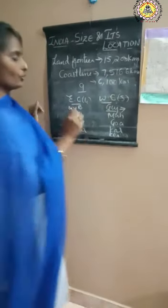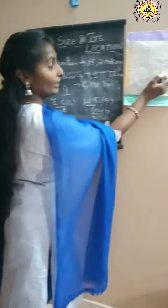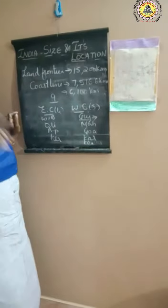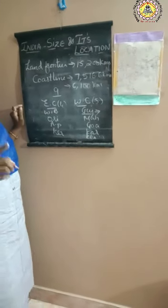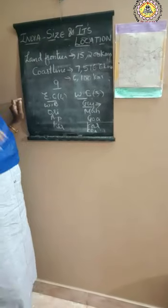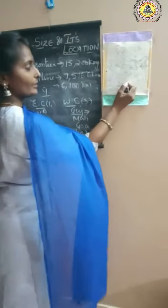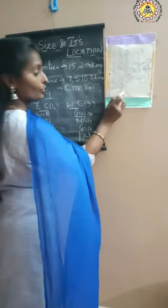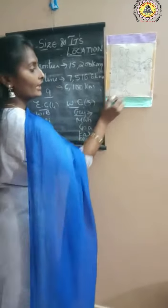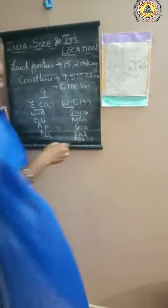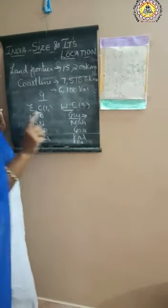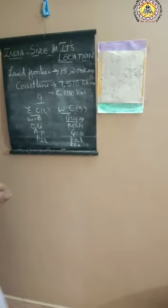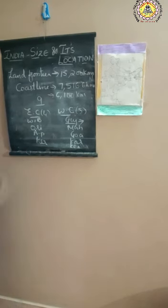Each coast has a different name. West Bengal has the Bengal Coast. Odisha has the Utkala Coast — you may notice 'Utkala' when you sing Jana Gana Mana. Andhra Pradesh has the Srikar Coast. Tamil Nadu has the Coromandel Coast. Kerala has the Malabar Coast. Karnataka has the Kanara Coast. Maharashtra and Goa share the Konkan Coast.